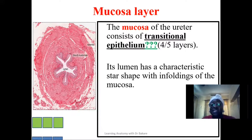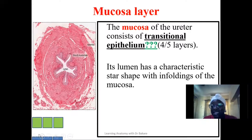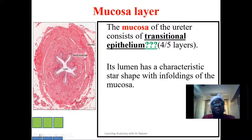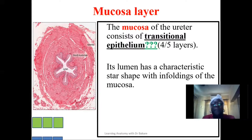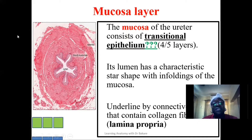When the ureter is distended or filled with urine, a form of elasticity occurs and it stretches, causing the epithelium to become flat. In a normal state, the epithelium appears cuboidal. You cannot specifically say it is squamous or cuboidal — it depends on the content. If filled with urine and expanded, the epithelium will be flat; if in a normal state, it will appear cuboidal.